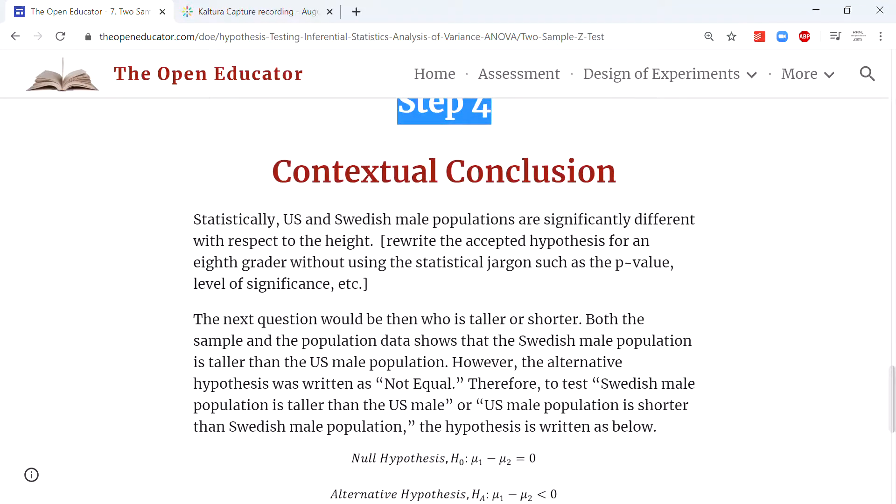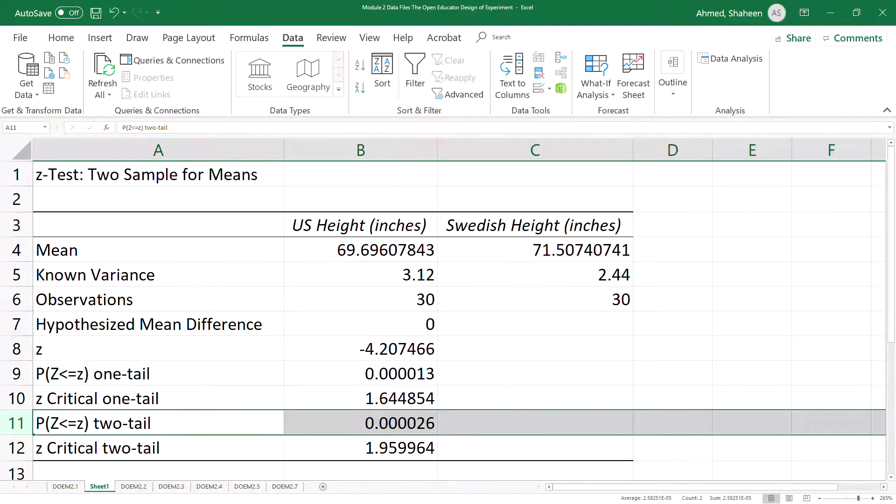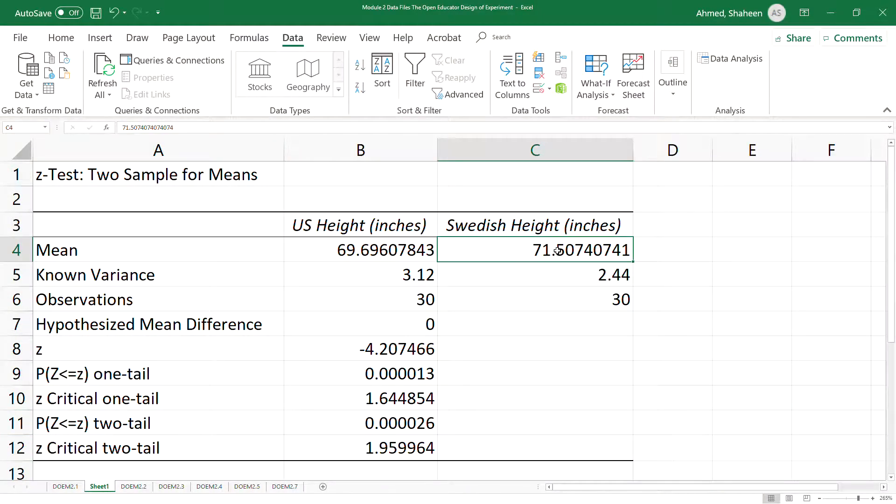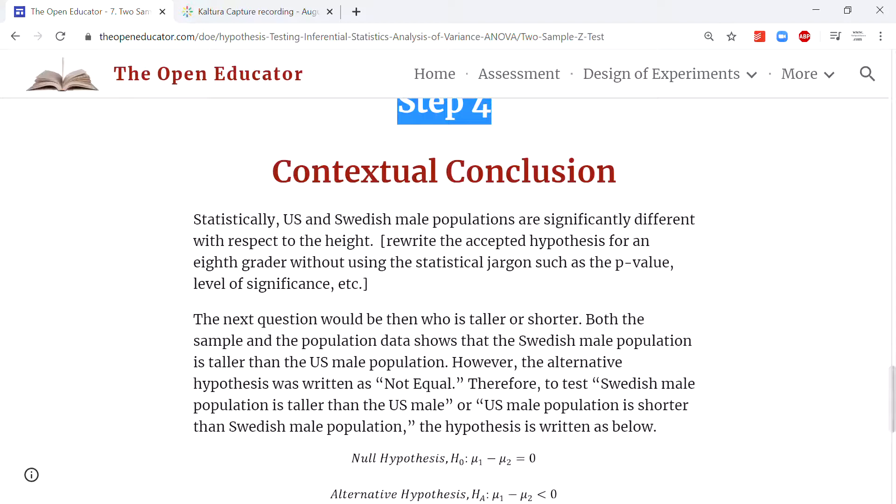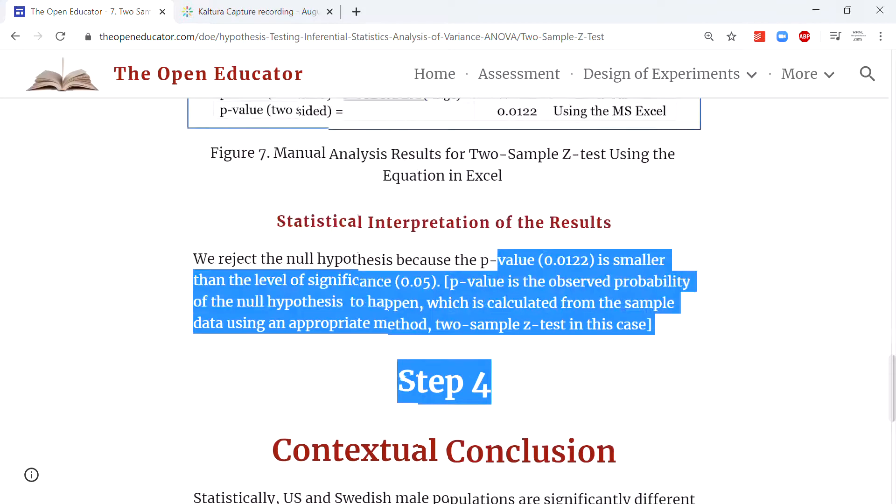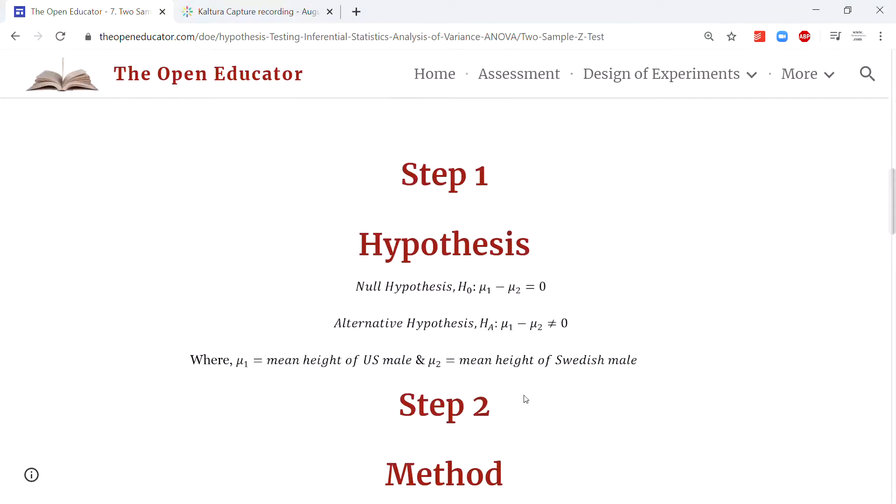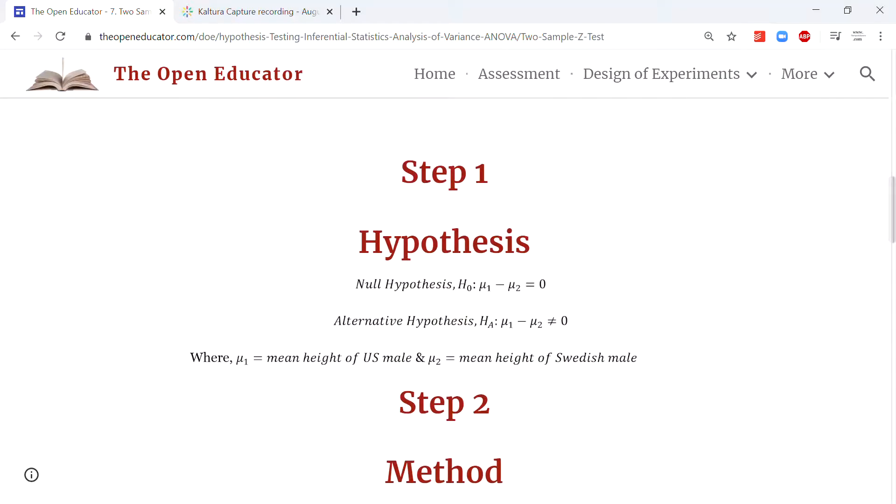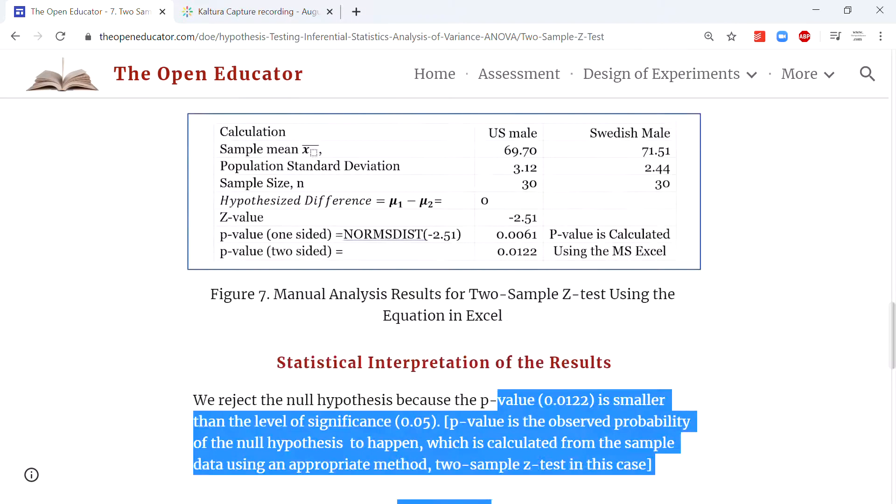When you reject the null hypothesis, they're different. Now the next question would be: who is taller? You can see here that the Swedish height in the sample is a little bit higher and the US is a little bit smaller. However, we can't use the same hypothesis to draw this conclusion. This is one of the mistakes my students make all the time. They see the alternative hypothesis is 'not equal,' so the only thing you can say is they're not equal. If you have to say one of them is taller than the other, you have to state the alternative hypothesis like that.